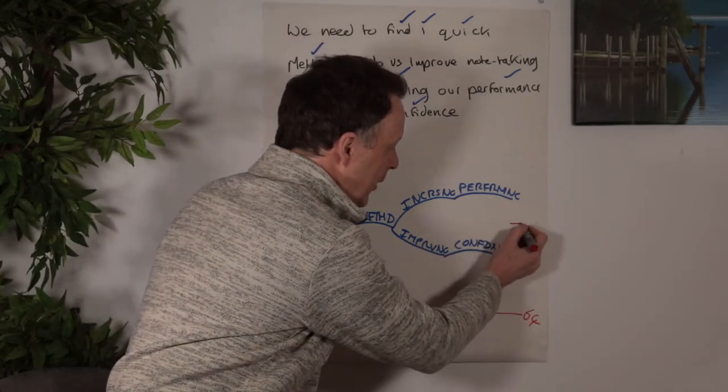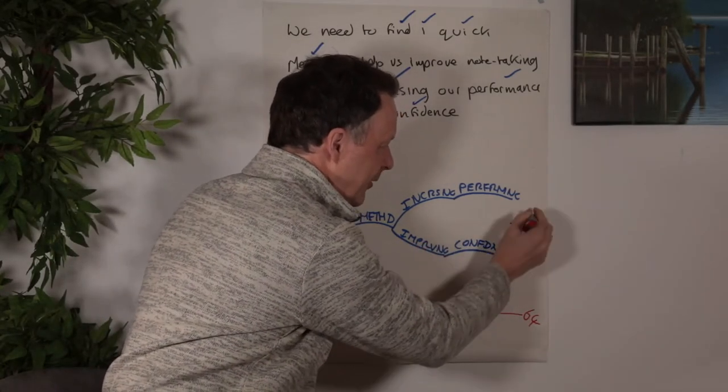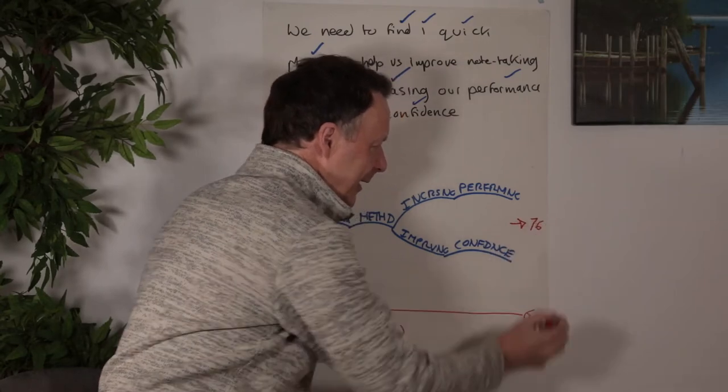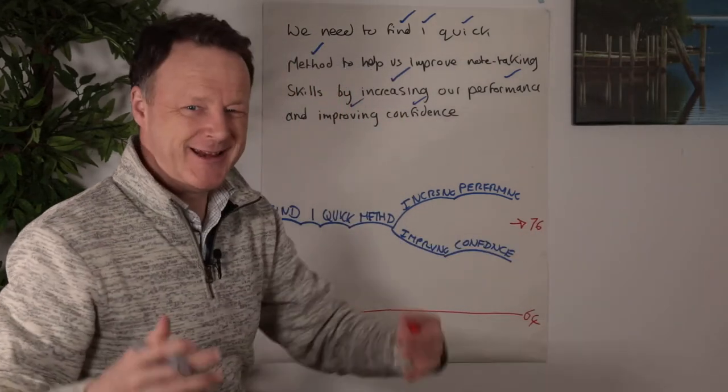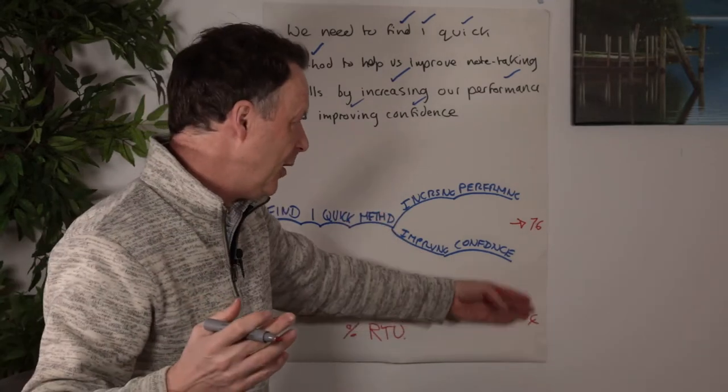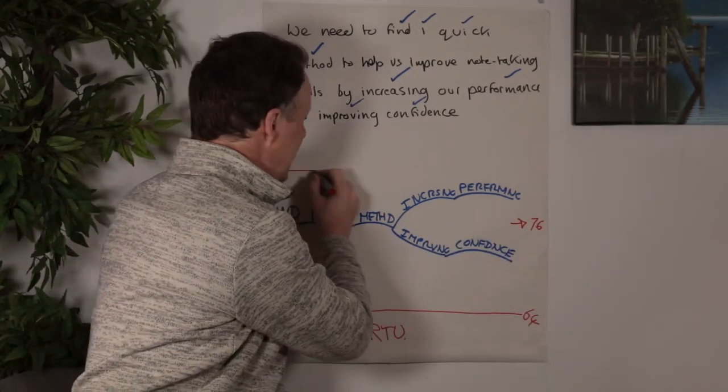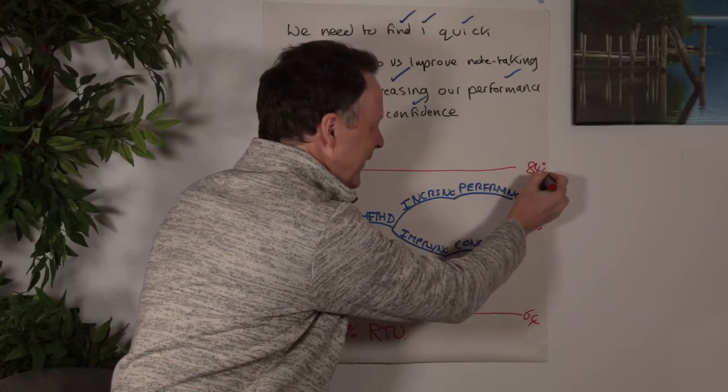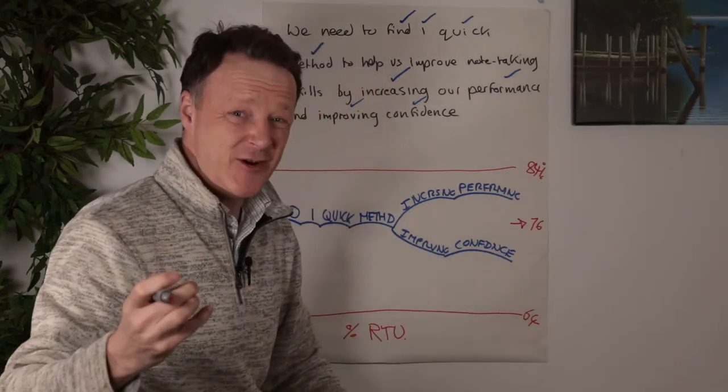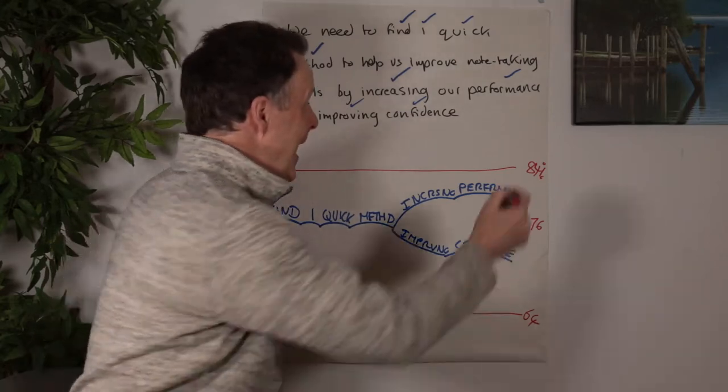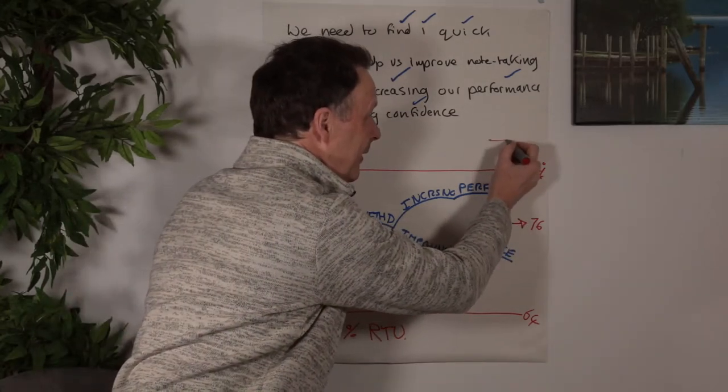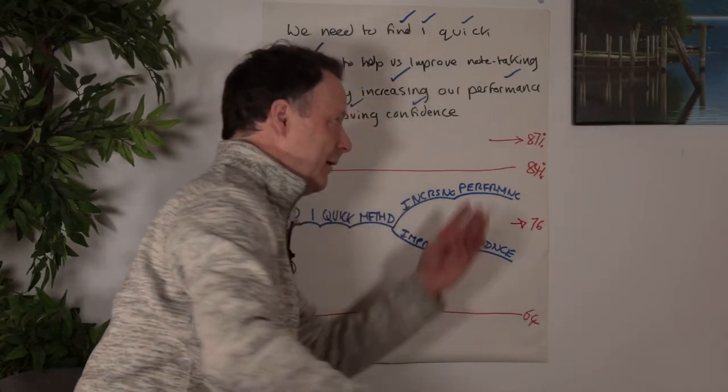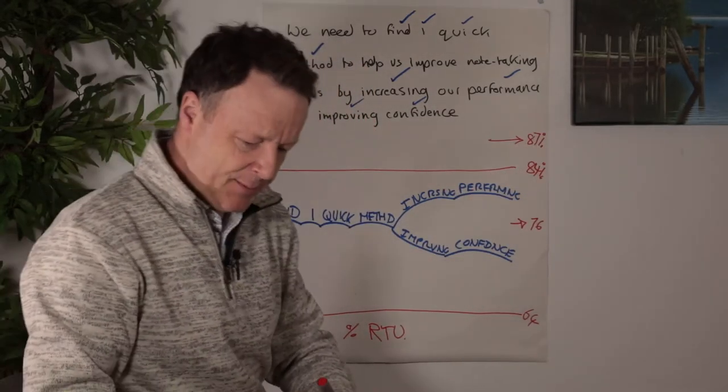By switching to next generation note-taking, both technique and mindset, suddenly your real-time understanding goes up to 76%, a 12% increase. And after a year, it goes up even further to 84%, that's a 20% increase, which is amazing. And for people who are dyslexic, and I personally am dyslexic, it goes up to an incredible 87%.